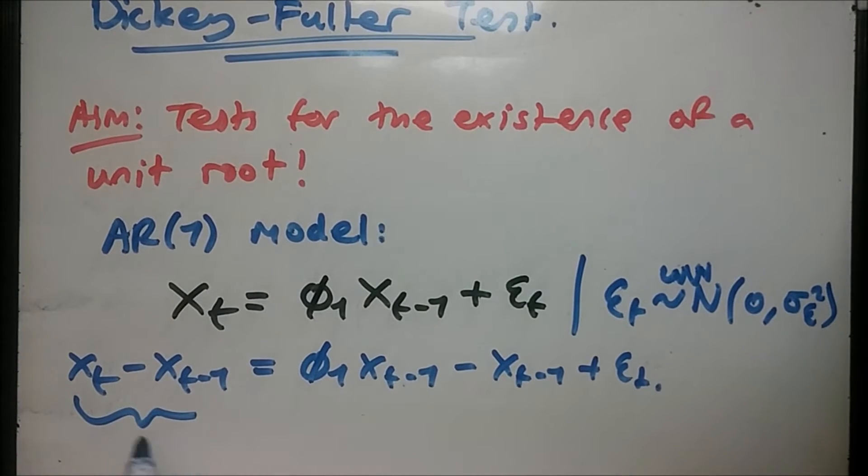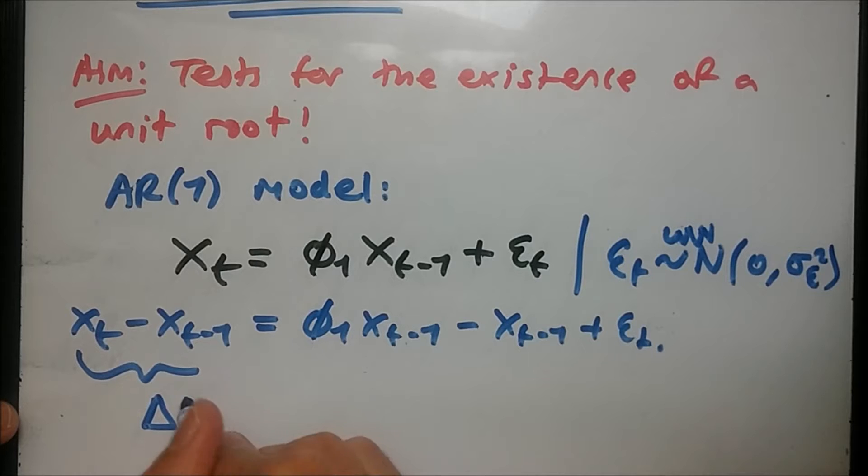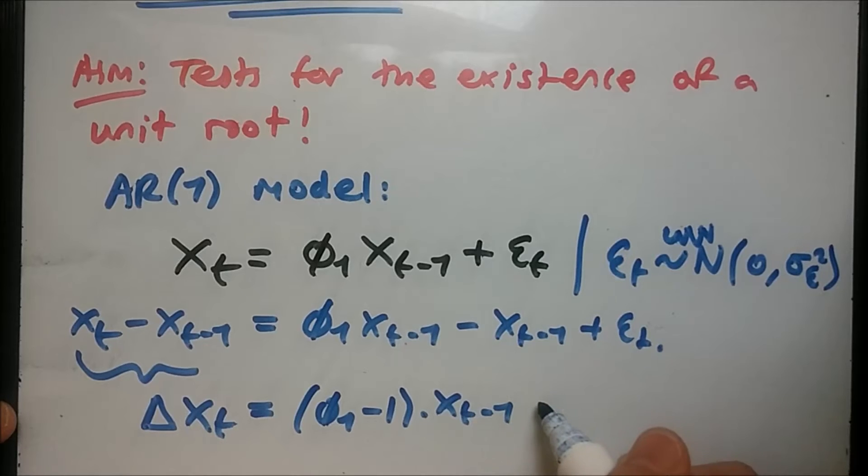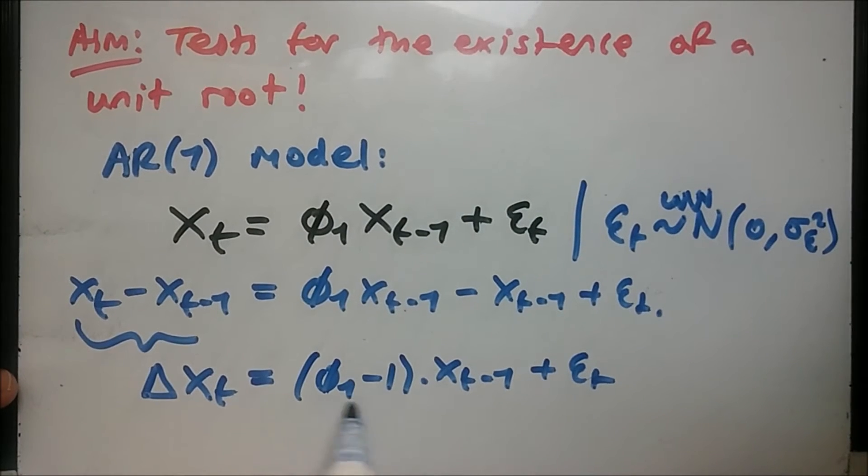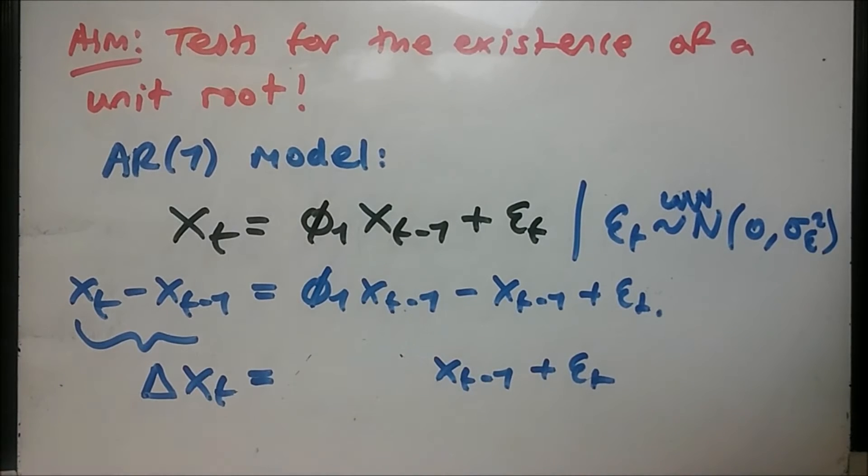Now factorizing terms, when you have X_t minus X_t minus 1 we use something known as the difference operator. This is considered a first difference. We note this as delta X_t. Notice that we can factor X_t minus 1 here. We should get phi_1 minus 1 times X_t minus 1 plus epsilon_t. Now I'm going to reparameterize this into a different variable. I'm going to call this pi.